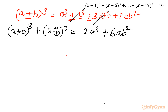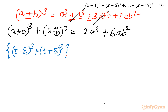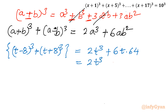Now applying the formula to the first group: (t minus 8)³ + (t plus 8)³. Here a = t and b = 8, so it becomes 2t³ + 6t·(8²) = 2t³ + 6t·64 = 2t³ + 384t.